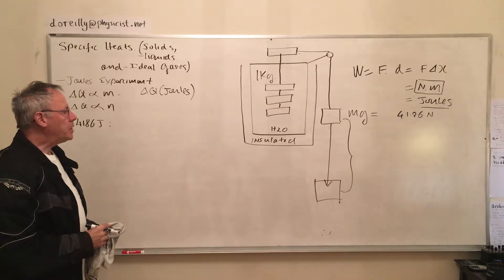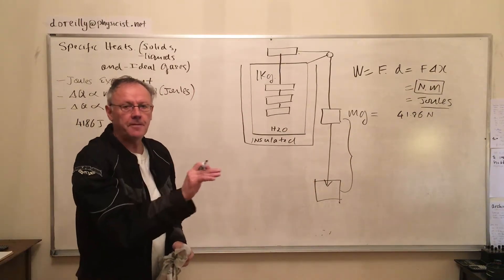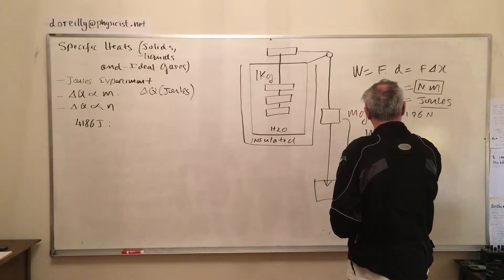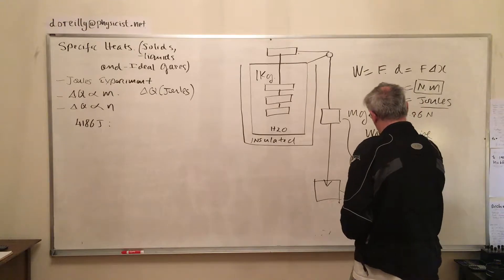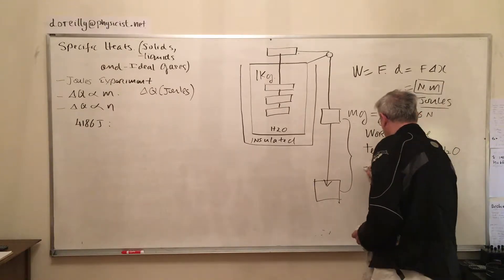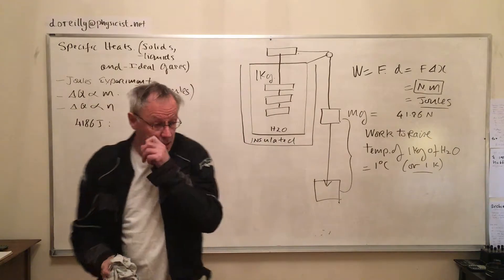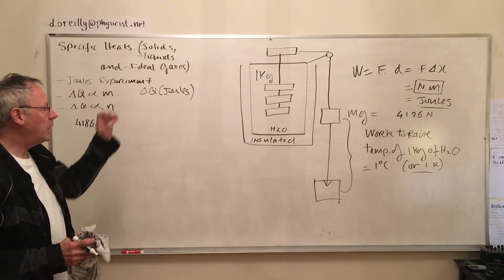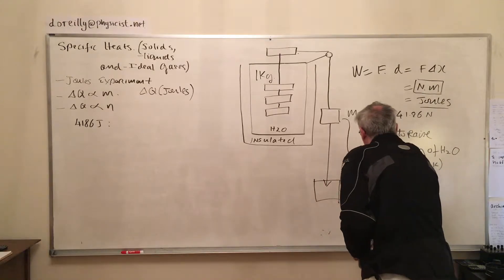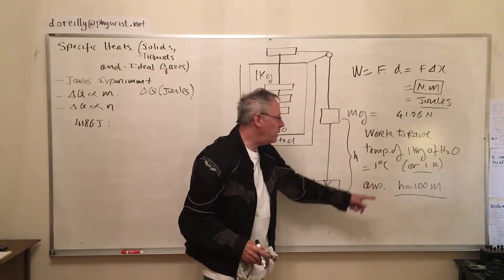Now we're going to let it fall a certain distance, and I'm going to put one kilogram of water in here just to make it easy. The question is, how many joules of work should this guy do to raise the temperature of one kilogram of water one degree K or one degree C? Well, the answer is we have to let this guy fall through a height of 100 meters.